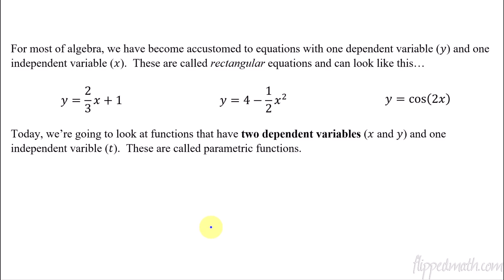First off, let's remember that for most of algebra and through high school, you've been dealing with things we often call rectangular equations. That's just where you have one variable that's a dependent variable — often we call it y — and then an independent variable, which we often refer to as x. These are just some quick examples of rectangular equations: one independent, one dependent variable.